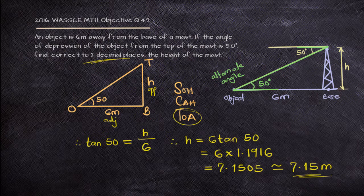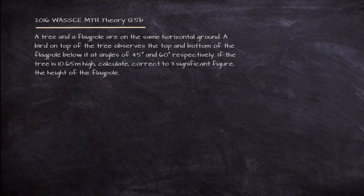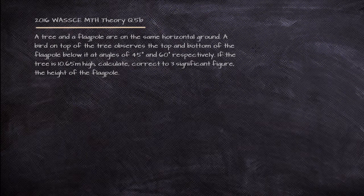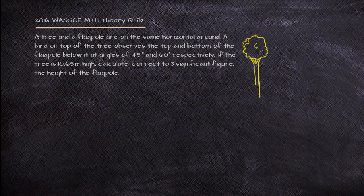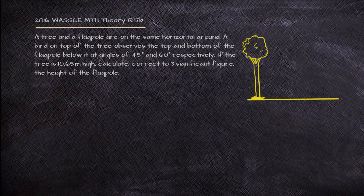Let's go to our theory question. We need to interpret this correctly. There is a tree and a flagpole on the same horizontal ground. A bird on top of the tree observes the top and bottom of the flagpole below it at angles of depression of 45 and 60 degrees. We are given the height of the tree and asked to find the height of the flagpole.